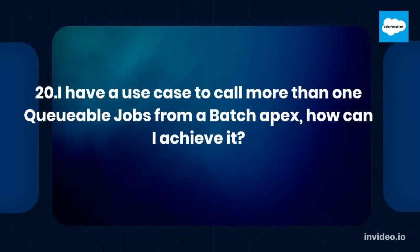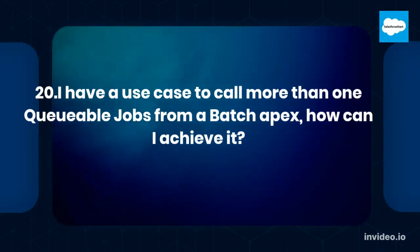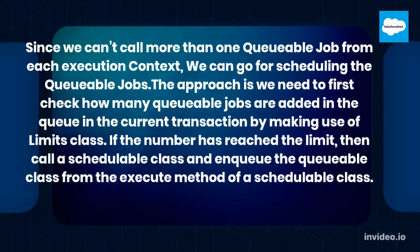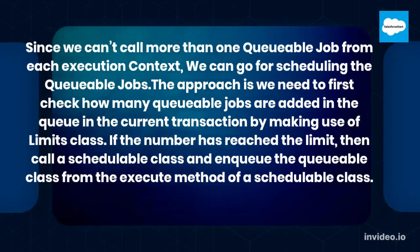I have a use case to call more than one Queueable job from a Batch Apex. How can I achieve it? Since we can't call more than one Queueable job from each execution context, we can go for scheduling the Queueable jobs. We need to first check how many Queueable jobs are added in the queue in the current transaction using the Limits class. If the number has reached the limit, then call a Schedulable class and enqueue the Queueable class from the execute method of the Schedulable class.